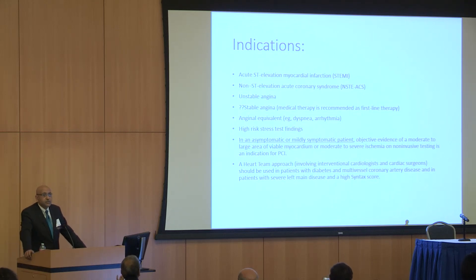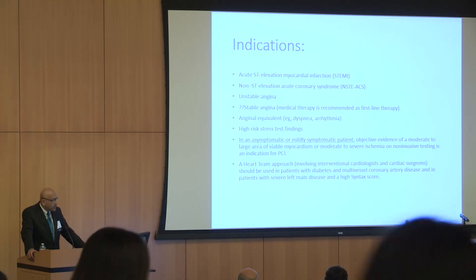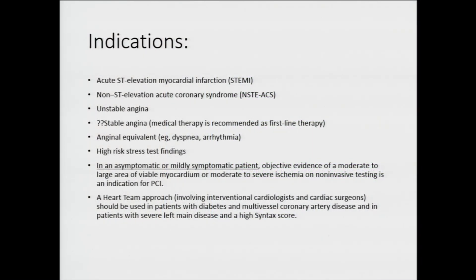What are the current indications for stent procedures? One classic indication is STEMI. The second is non-ST-elevation MI or unstable angina. These first categories make up what we call ACS, or acute coronary syndrome. The fourth category is stable angina — patients who have dyspnea or chest tightness with exertion but feel fine otherwise. The current guideline recommendation is that rushing into a stent is unnecessary; more often, the best course is medical therapy with deferred stenting.